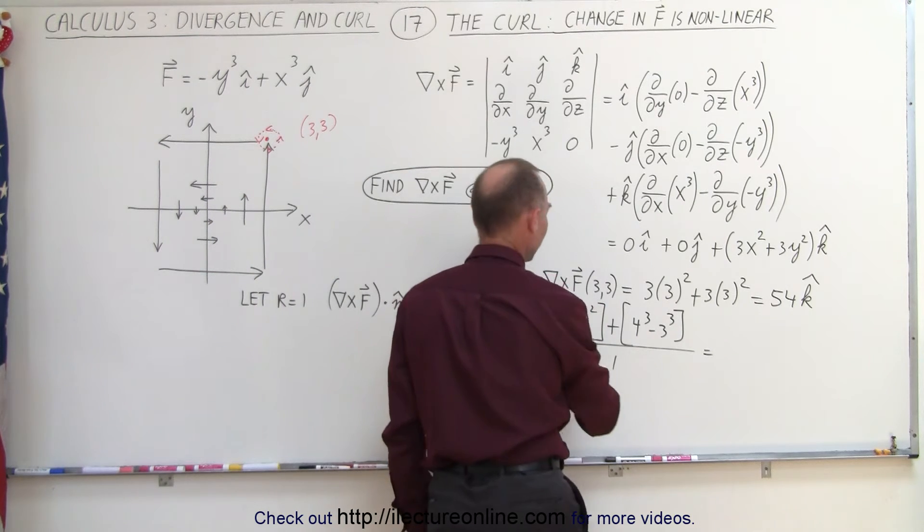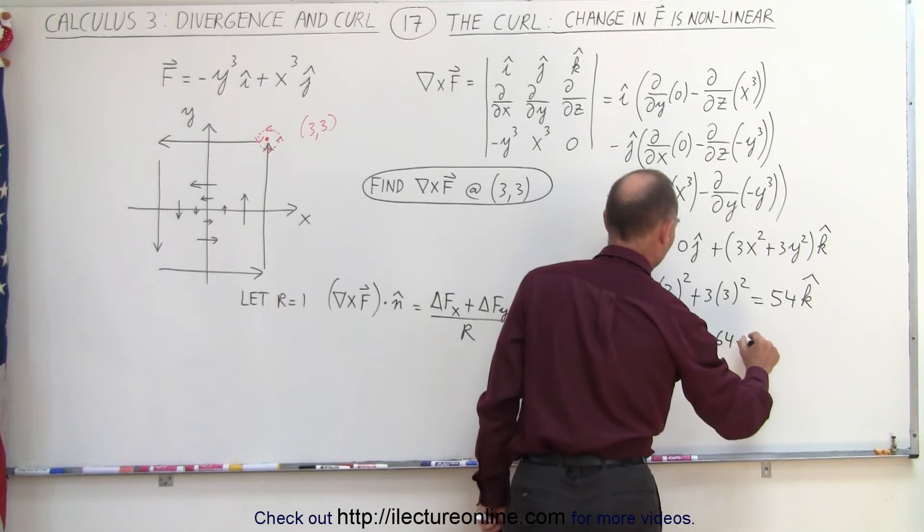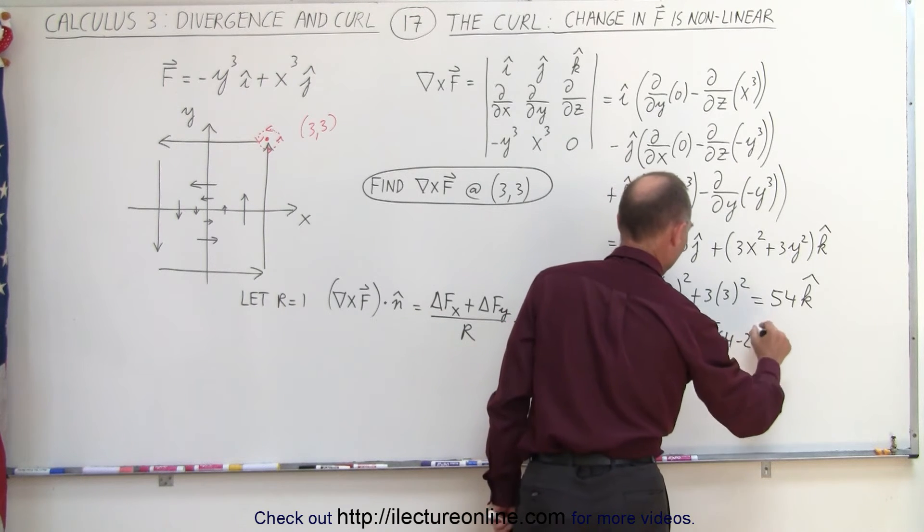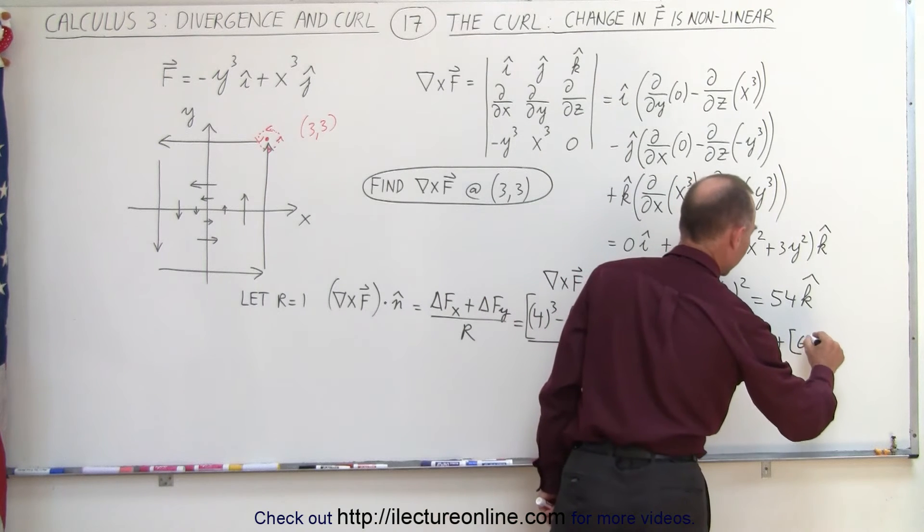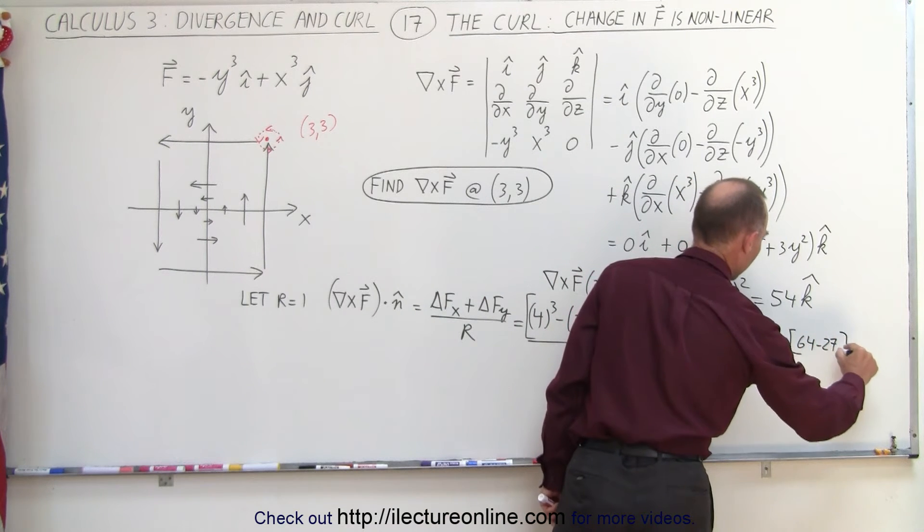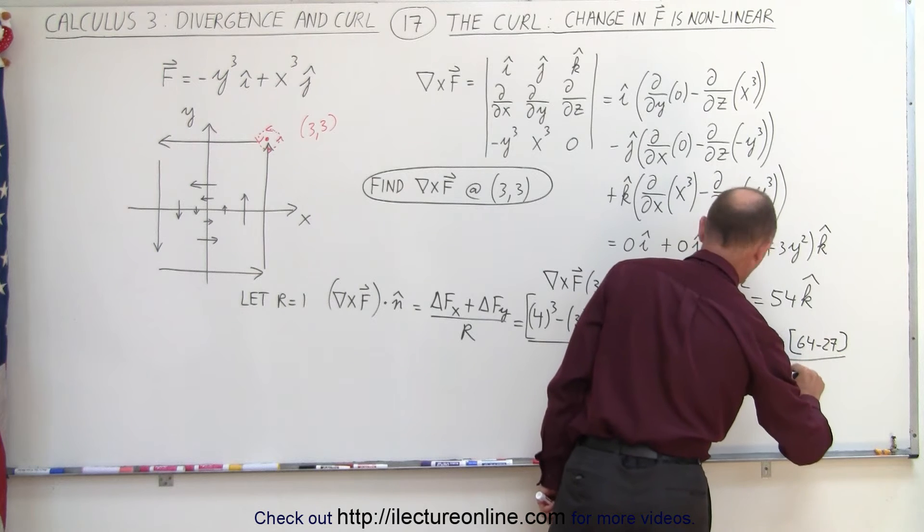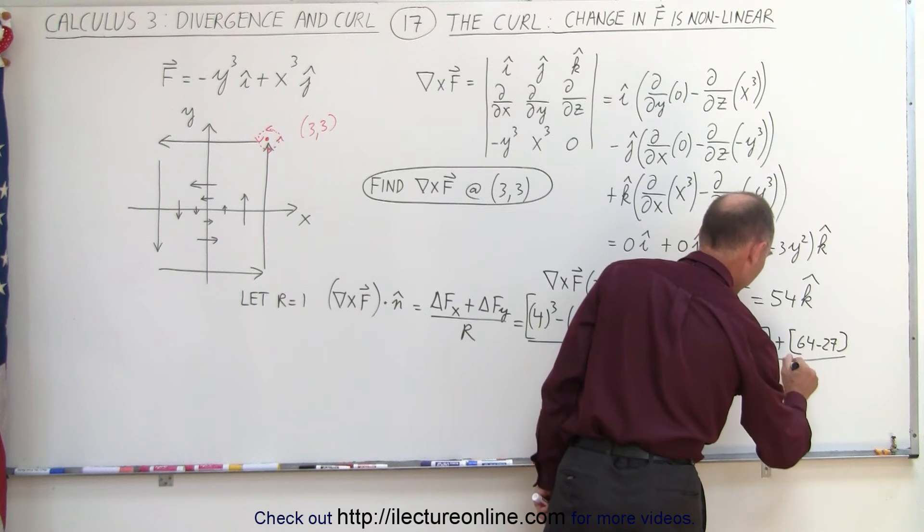And let's see if we get a value that's close to 54. So 4 cubed, that's 64 minus 27, and I add that to 64 minus 27, and I divide that by, oh, not 2, but by 1, because I only move one unit.